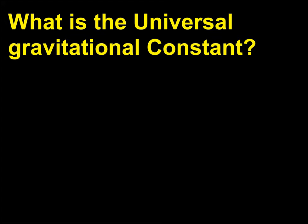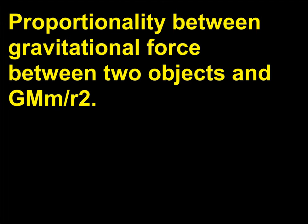What is the universal gravitational constant? The universal gravitational constant is the proportionality constant between gravitational force between two objects and GM₁M₂/r².